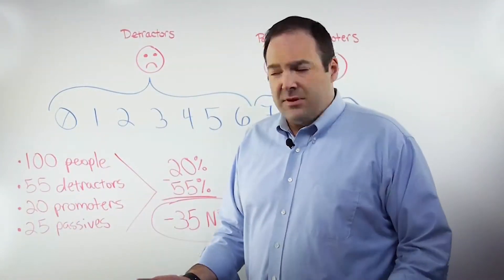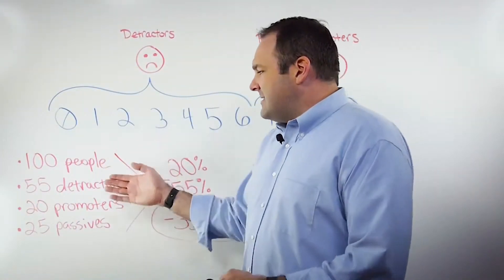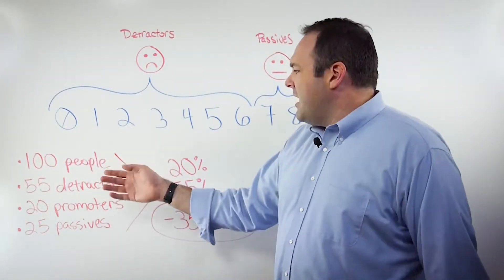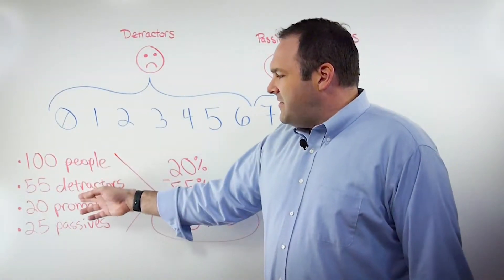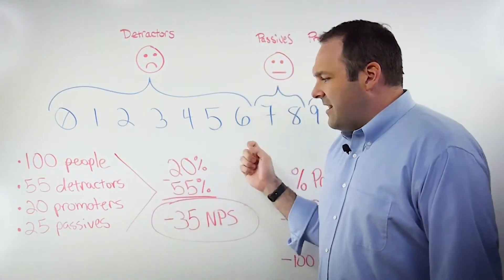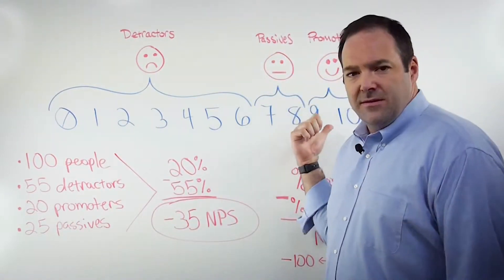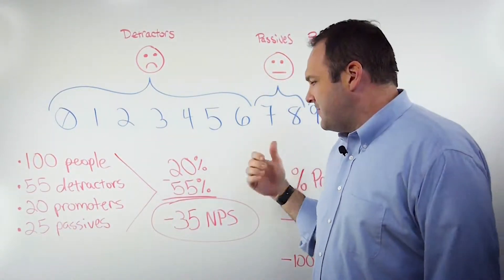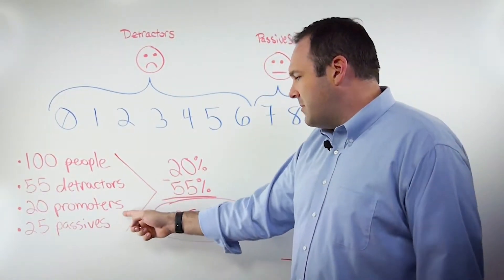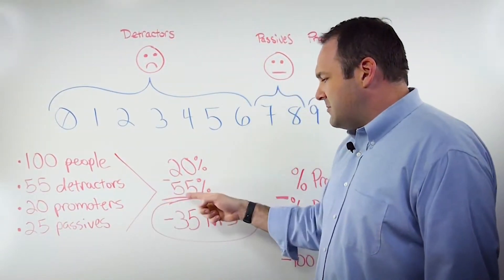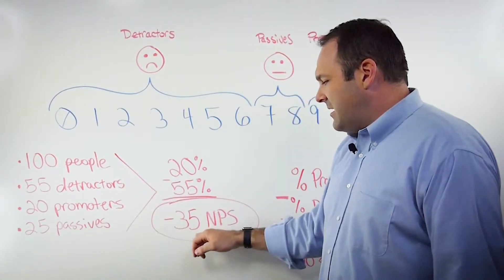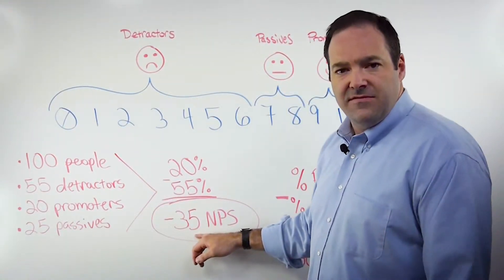So if we were to look at an example of that, let's say that we sent a survey to 100 people, just to make the math a little easy. 55 of those came back as detractors, 25 came back as passives, and 20 of them were promoters. So we take the 20% of promoters, subtract the 55% of detractors, and you get an NPS of negative 35.